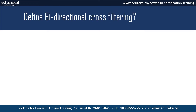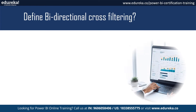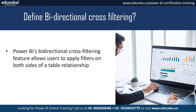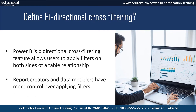Next, let's talk about defining bi-directional cross-filtering. Power BI's bi-directional cross-filtering is a feature that allows users to apply filters on either side of a table relationship. Report creators and data modelers can use this to give more control over applying filters over their data.